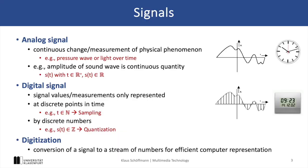Analog signals exhibit continuous variations such as sound waves or light intensity measured over time. The signal value st is continuous and represented in real numbers. Digital signals however are represented at discrete time intervals through sampling and quantization.